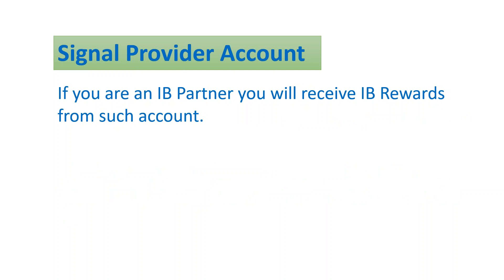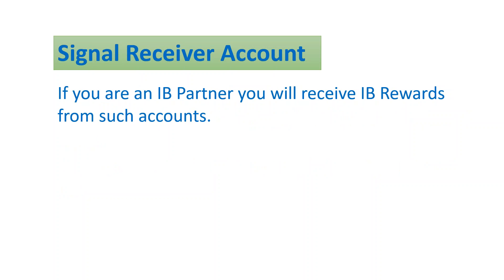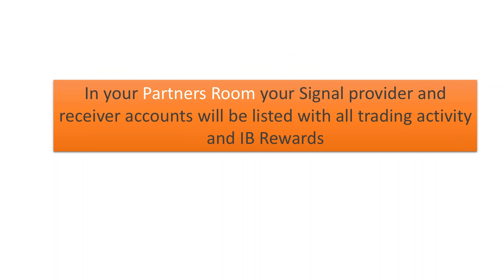If you are an IB partner with a signal provider account, you will receive the IB rewards from such accounts because it is holding real money. The receiver account is simply like a normal markets account, which you can trade both when it is copying signals and when it is not. You can close trades that are copied that you do not like, and you can interfere whenever you like with the signals it's receiving from the provider. You can also disconnect completely whenever you need to. If you are an IB partner, you will receive IB rewards from your receiver accounts because they too are holding real money and are both tradable. In your partner's room, your signal provider and receiver accounts will both be listed with any trading activity and corresponding rewards.